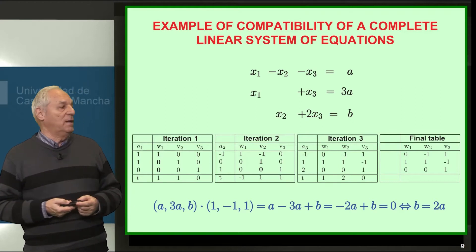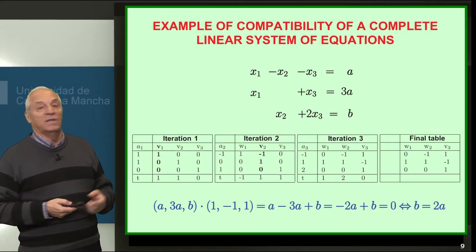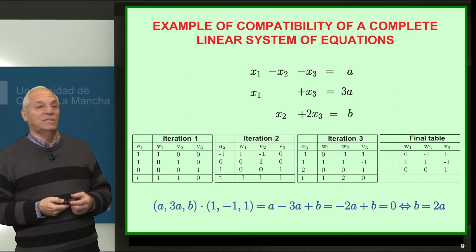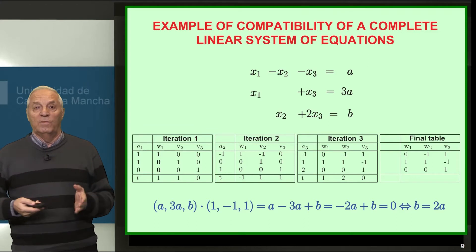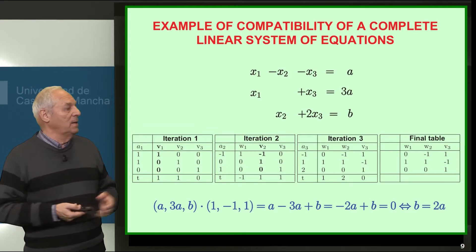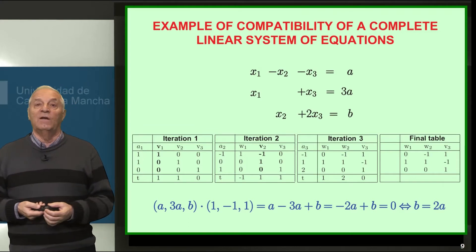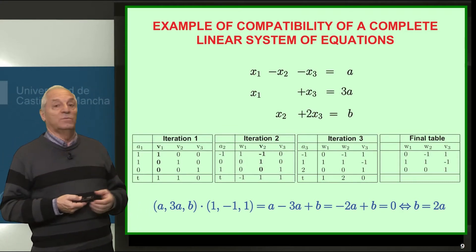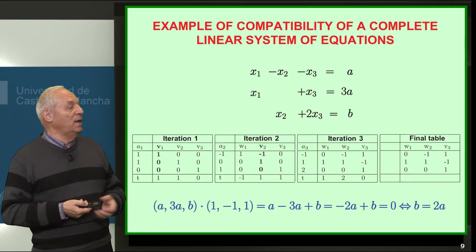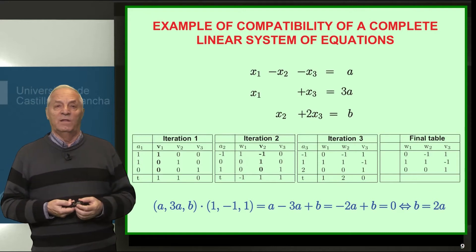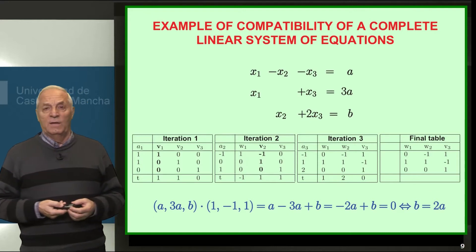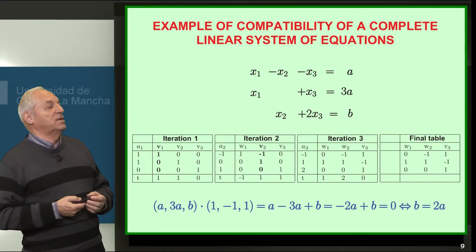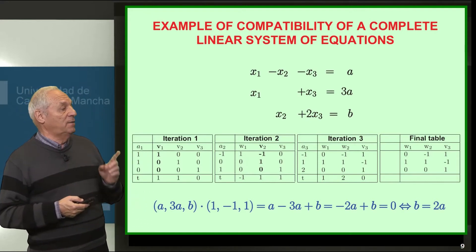Starting with the first column: it corresponds to the coefficients of x1 in the three equations, which are 1 in the first, 1 in the second, and 0 in the third — so the vector is (1, 1, 0). We enter this vector into the algorithm in iteration 1, pivot as usual, and obtain the matrix for iteration 2.